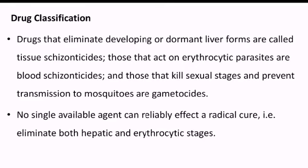Drugs that eliminate the developing or dormant liver forms are called tissue schizonticides. Those that act on erythrocytic parasites are blood schizonticides, and those that kill sexual stages and prevent transmission to mosquitoes are gametocytals. To summarize: schizonticides kill liver forms, blood schizonticides kill erythrocytic parasites, and gametocytals kill sexual stages and prevent transmission.